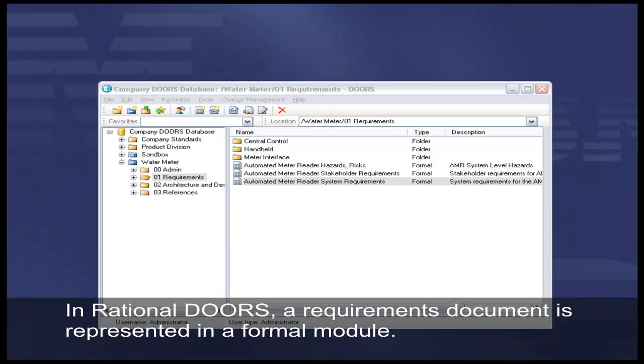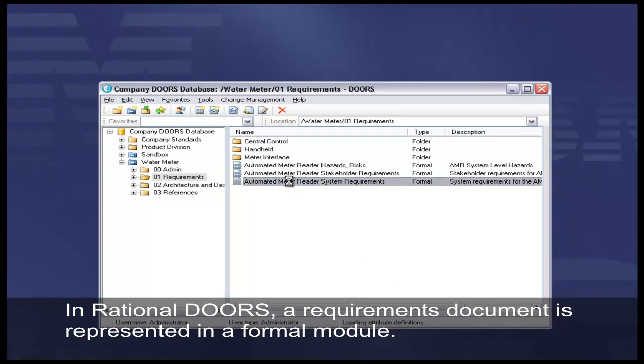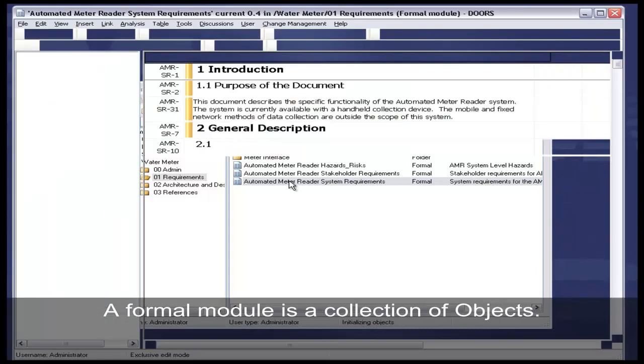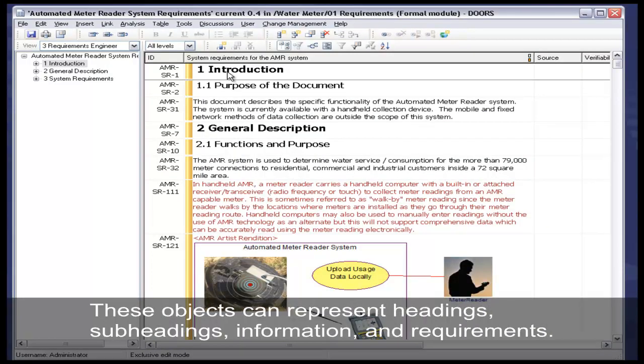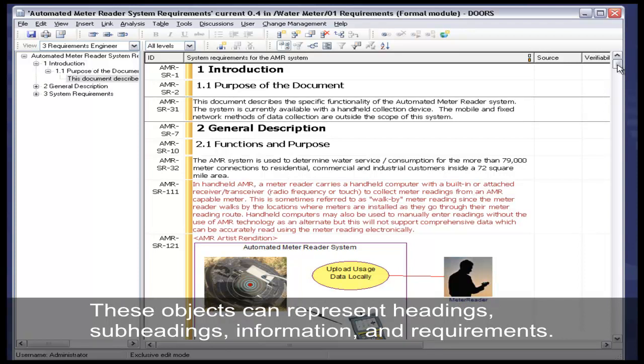In Rational Doors, a Requirements document is represented in a formal module. A formal module is a collection of objects. These objects can represent headings, subheadings, information, and requirements.